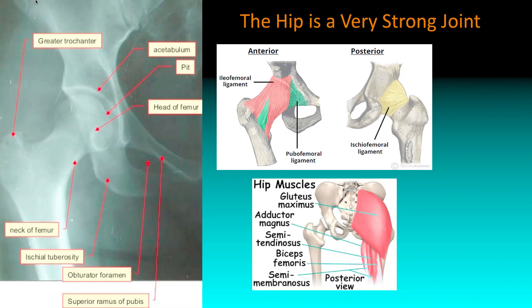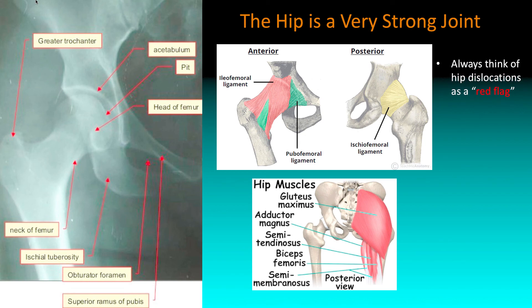In general, the hip is a very strong joint. It's a pretty deep socket. You've got a lot of ligaments there, most notably the iliofemoral ligament, and your hip muscles are pretty powerful in general. So if you do see a hip dislocation, think of it as a red flag — these aren't that common.